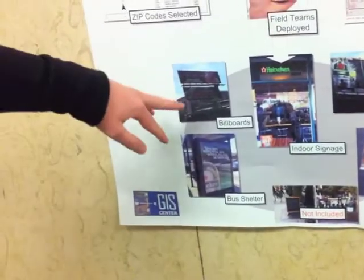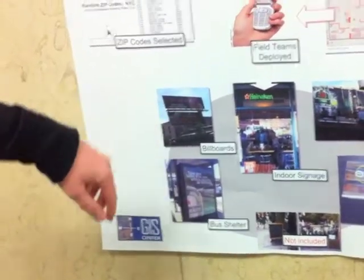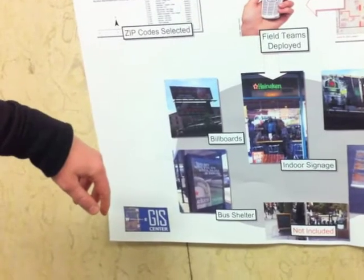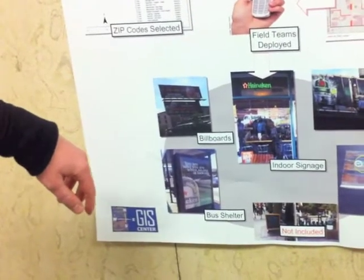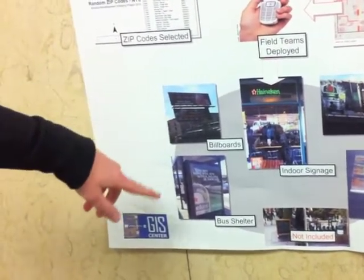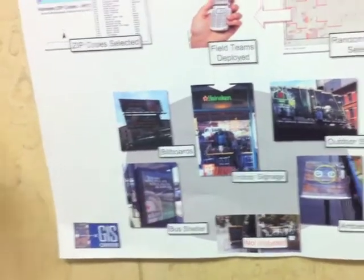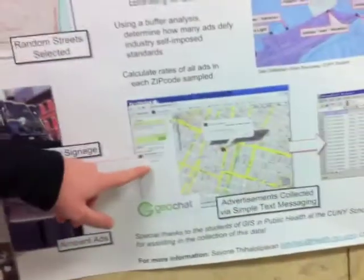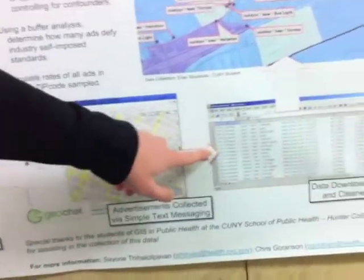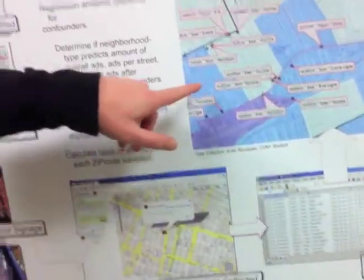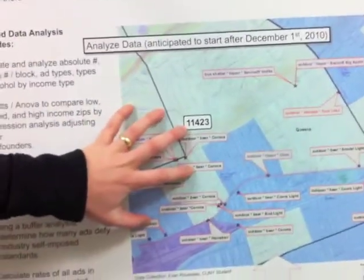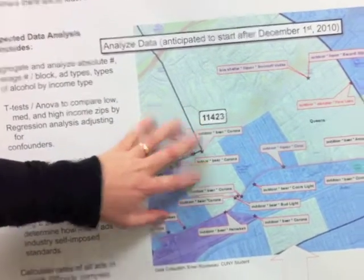These are the five different types that we categorize the data into — whether it be a billboard, a bus shelter, indoor signage, et cetera. And then once that data is collected through GeoChat, we download it and we clean it up a little bit, and we put it into ArcGIS for further spatial analyses.